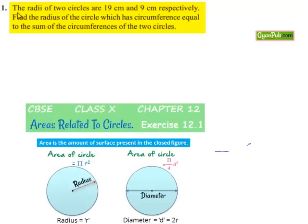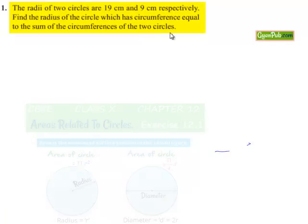Coming to the first problem: the radii of two circles are 19 cm and 9 cm respectively. Find the radius of the circle which has a circumference equal to the sum of the circumferences of the two circles. Now moving on to the solution.